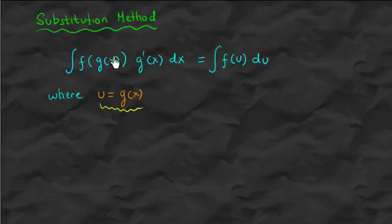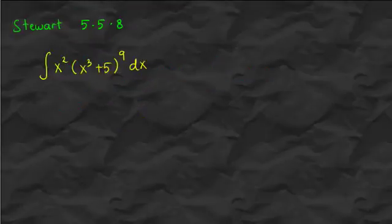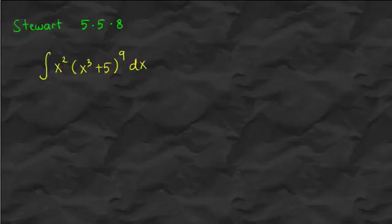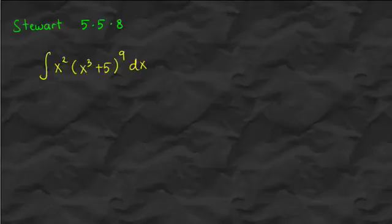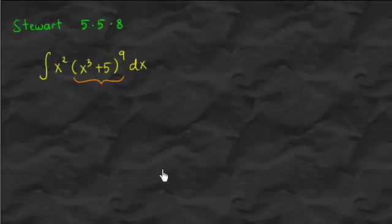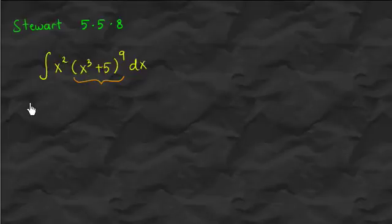To make this more clear, let's look at some examples. Here is one example taken from Stewart's Calculus book. Remember that we pick u as the inside function from a composition function. Looking at this expression, we can easily see that the composition function is this expression here, and we need to pick u as the inside function of that composition function. In this case, the inside function is exactly x cubed plus 5, so u equals x cubed plus 5.